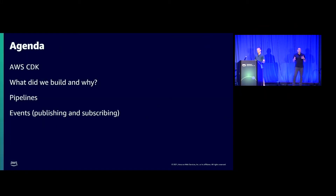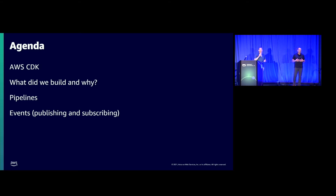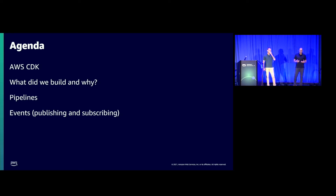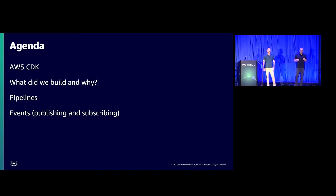The theme of our talk today is how we help our Blackboard teams deliver software faster with more confidence as we move and mature our journey into the cloud. We're going to talk about the importance of AWS CDK for us, and then give some examples about how we leverage CDK and other AWS services to improve the developer experience, and go through what we built and why.